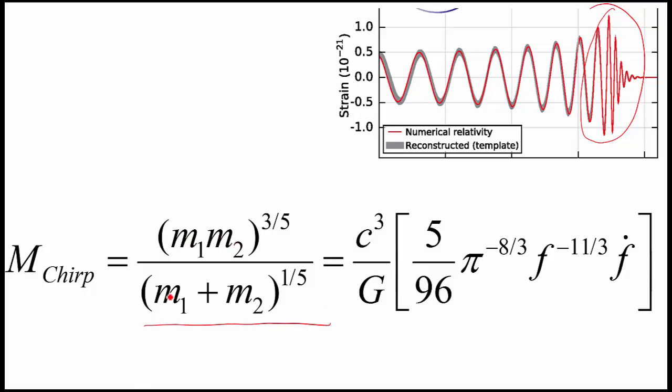It's the mass of the two objects multiplied together divided by the sum of the two masses basically. And that you can work out from the data here by looking at the frequency to the minus 11 third power and f dot, which is the rate of change of the frequency. So in the early stages here you can see what's the frequency, how fast is it speeding up, and that tells you the chirp mass. And the chirp mass comes out as about 30 solar masses.